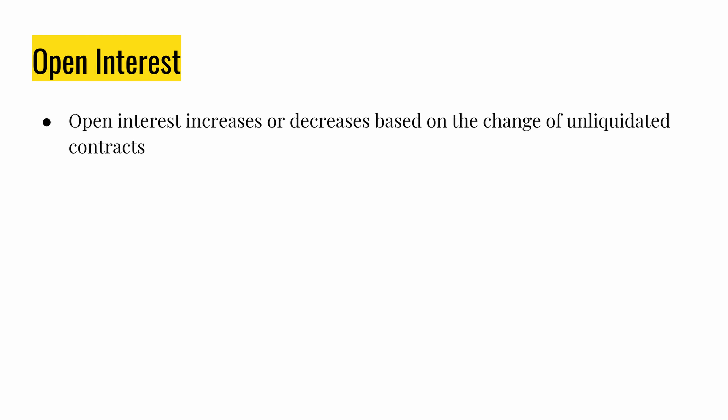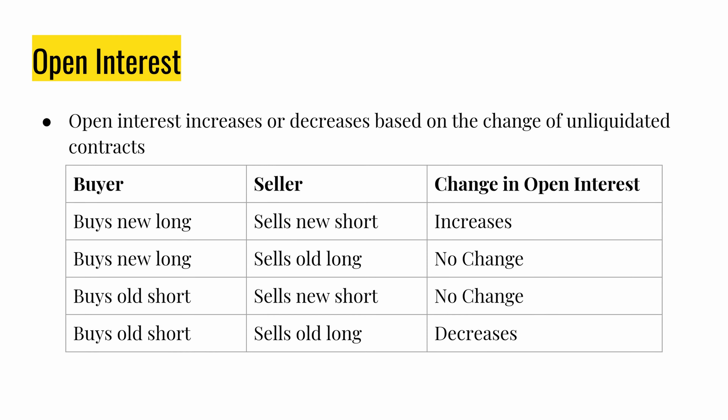Now let's talk about the mechanics behind open interest. Open interest increases or decreases depending on the change of unliquidated contracts — the value changes as people buy or sell their contracts. There are four scenarios: first, a new long and a new short both created — open interest increases. Second, a new long bought but an old long sold — no change. Third, a new short sold while an old short is bought — no change. Fourth, a buyer buys an old short while the seller sells an old long — open interest decreases.